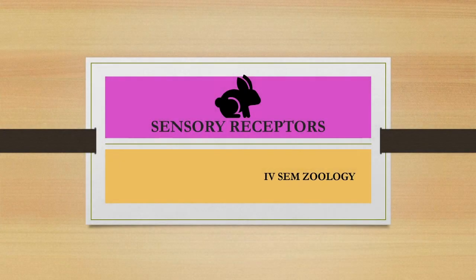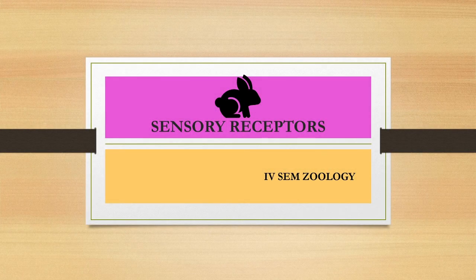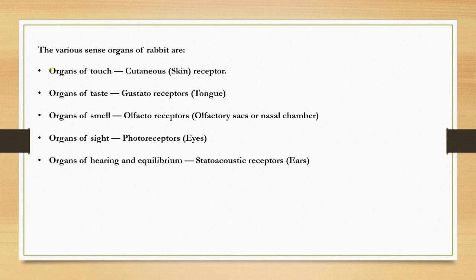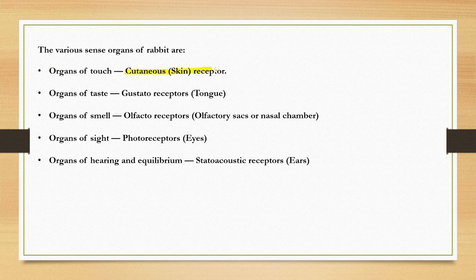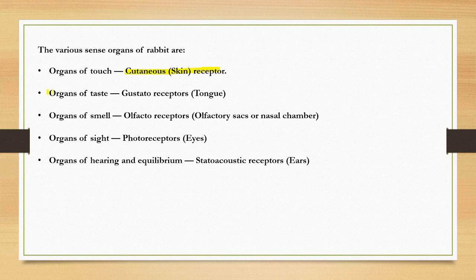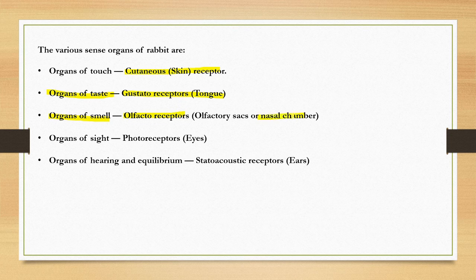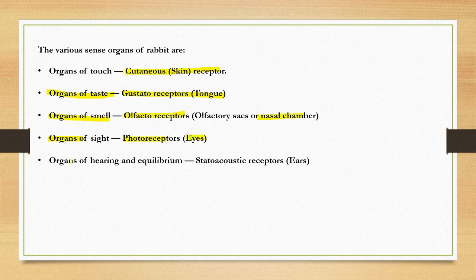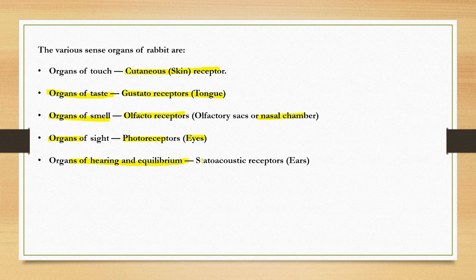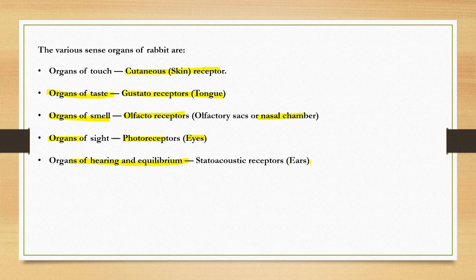Sensory receptors in rabbit. The sense organs of rabbit are: organs of touch, known as cutaneous receptors or skin receptors; organ of taste, called gustatory receptors, present in the tongue; organs of smell, called olfactory receptors, in the nasal chamber; organs of sight, the photoreceptors, which are the eyes; and organs of hearing and equilibrium, statoacoustic receptors, called the ears.